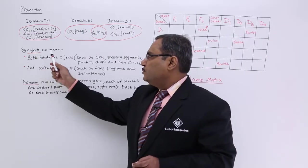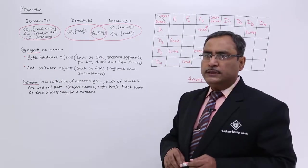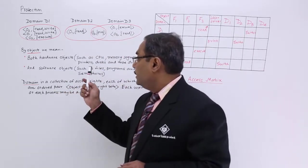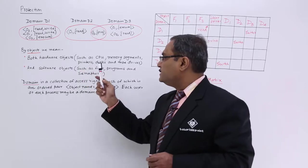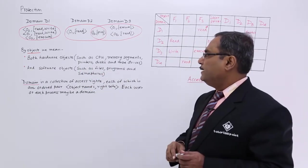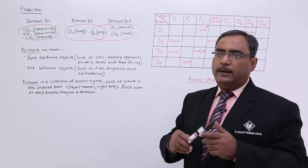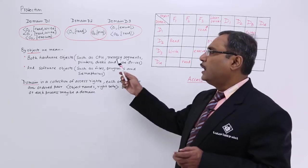By objects, we mean the hardware objects or the software objects. So, it can be hardware or software. In case of hardware objects such as CPU, memory segments, printer, disks, tape drives, it can be one object that means some hardware resources.